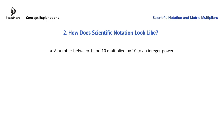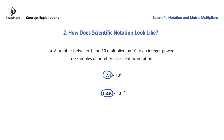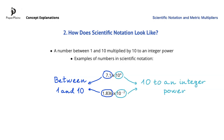Let's see two examples of numbers written in scientific notation. You can see that both 7.1 and 1.836 are numbers between 1 and 10, and they are multiplied by 10 to the power of 4 and 10 to the power of negative 2 respectively. Note that both 4 and negative 2 are integers. Scientific notation has a few other technical details, but these are not really relevant to what we are covering in this video.